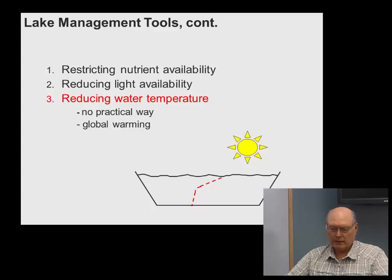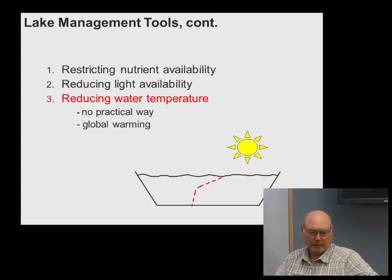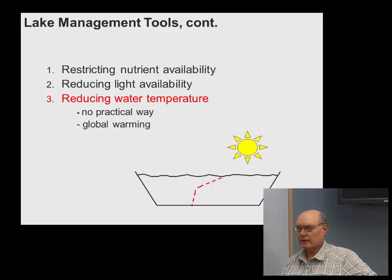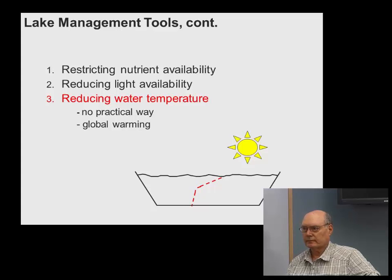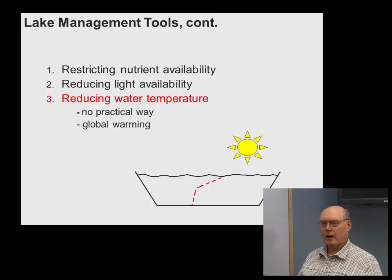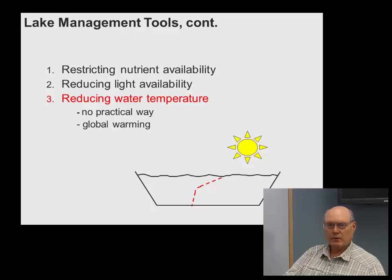Reducing water temperature is practically tough to accomplish, and with global warming it's becoming even more difficult to manage. However, an important approach used by many regions is increasing natural shading through streamside or lakeside vegetation growth, which can effectively help control water temperature — definitely worth listing.